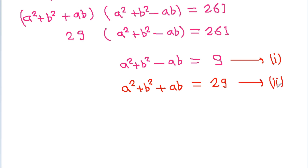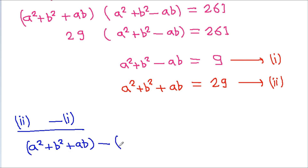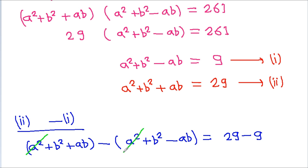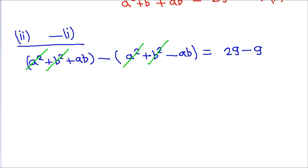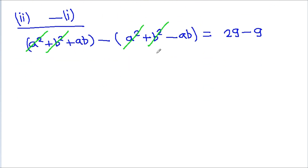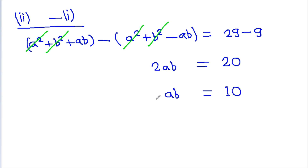Now subtracting equation 1 from equation 2: (a² + b² + ab) − (a² + b² − ab) = 29 − 9. The a² and b² terms cancel, leaving 2ab = 20, so ab = 10. The value of ab is 10.